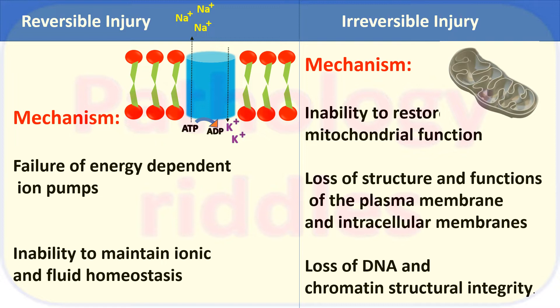In cases of irreversible injury, the mechanism is inability to restore mitochondrial function. Mitochondria is a very important organelle which gives energy to the cell and helps the cell maintain its homeostasis. If there is inability to maintain mitochondrial function, then it is irreversible injury.